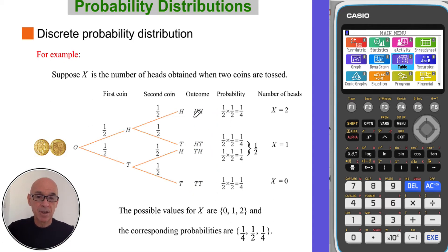So in the top outcome, X is 2, both coins showed a head. In both of these branches, one head was obtained, so that's X is equal to 1. And in the bottom branch, no heads were obtained, just two tails, so X is equal to 0. So overall, the possible values of X are 0, 1, and 2, and the probabilities are respectively a quarter, a half, and a quarter.